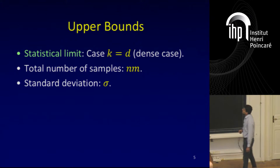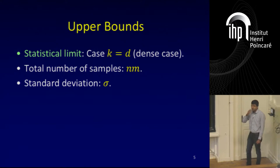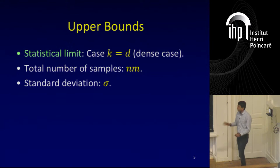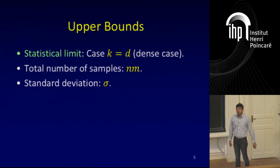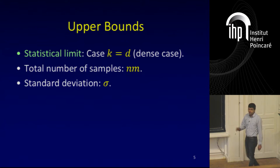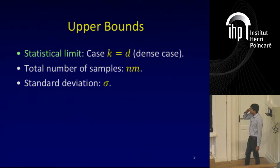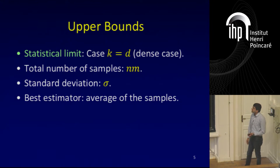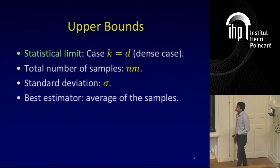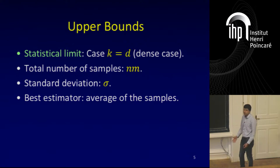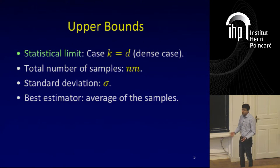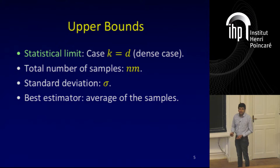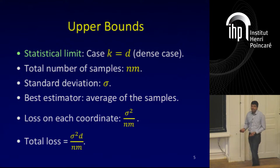Let us first look at the upper bounds known for this problem — the statistical limit. Assume all the samples are available to one machine. In the dense case (k equals d), with total number of samples n times m and standard deviation sigma, classical statistical theory tells us the best estimator is to take the average of the samples in each coordinate. The loss for this estimator is sigma squared times d over nm. The variance on each coordinate is sigma squared over nm, and the total loss on d coordinates is sigma squared d over nm.